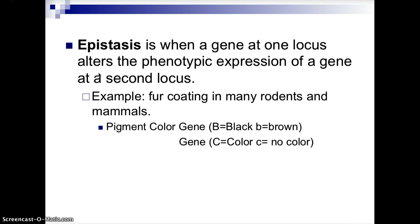Epistasis is when a gene at one locus alters the phenotypic expression of a gene at a second locus. Gene loci refers to where the genes are located on a chromosome. A good example is fur coloration in many rodents and mammals. A pigment color gene determines black or brown, and a separate gene determines whether color is expressed at all. If there is no color, you get an albino organism. If color is present, the organism can be black or brown — common in mice, rats, and other rodents.